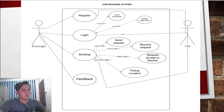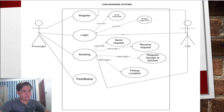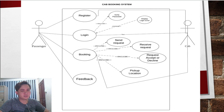The third function in the diagram is booking. The system allows the passenger to book a cab — this includes send request, receive request, accept or decline request, and pickup location. The last function is feedback, where users can give comments, ratings, and so on. That's all for the use case diagram section — thank you for listening.